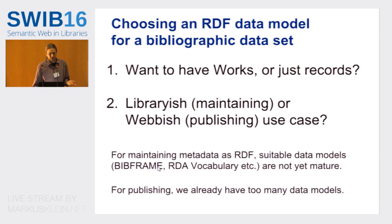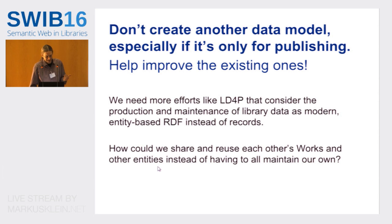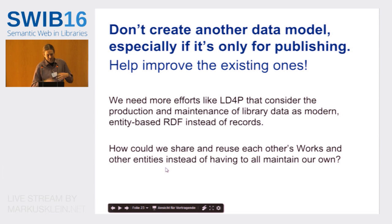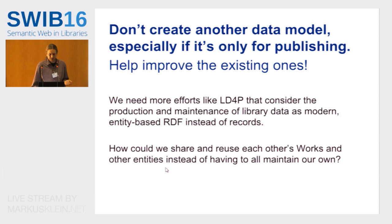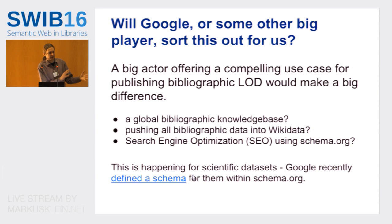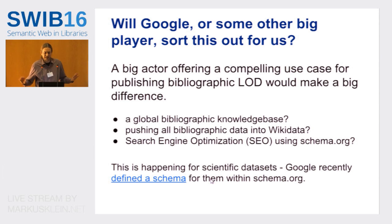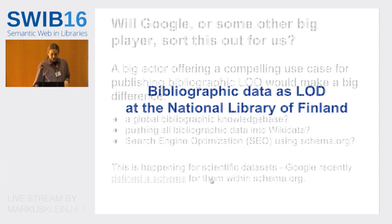If you want to choose a data model for a bibliographic data set, you have to think about at least whether you want to model works explicitly or just flat, and whether it's for maintaining or for publishing. What can we do? First, don't create more models. We need projects like Linked Data for Production that try to consider the perspective of maintaining things as modern entity-based models. We would like to share and reuse each other's data. It's possible that Google or somebody else will force us to use a specific model in the future, but I'm not counting on that happening.